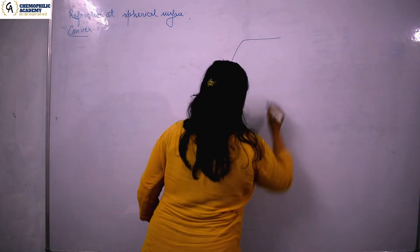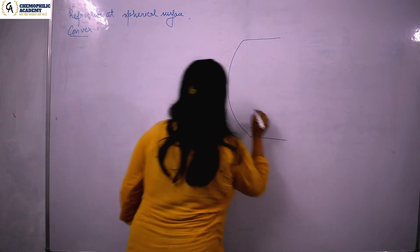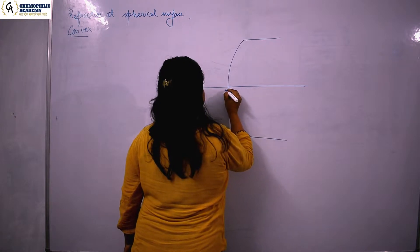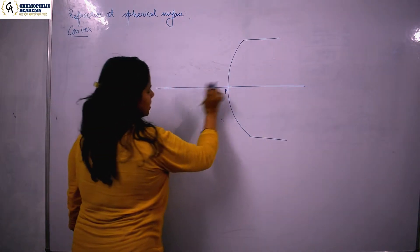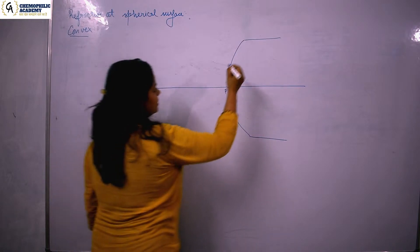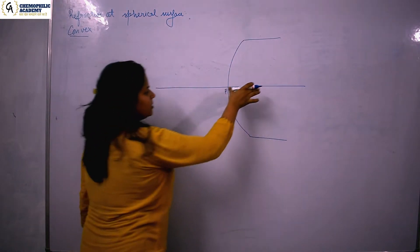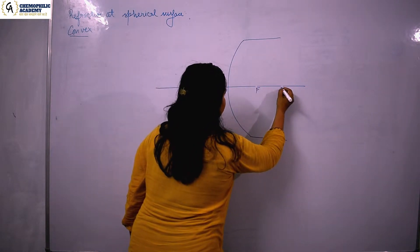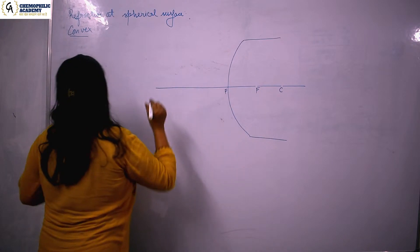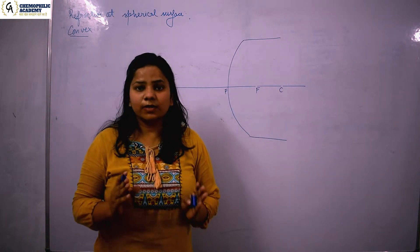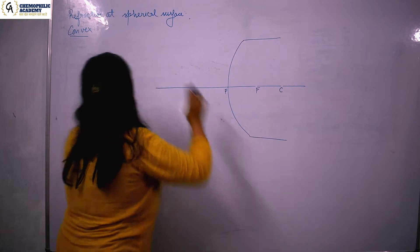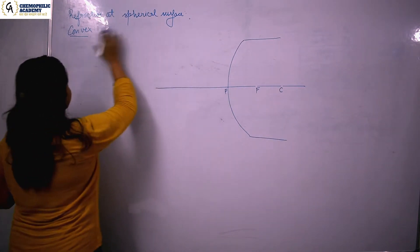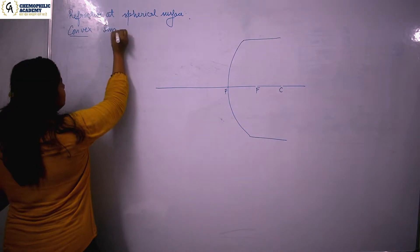This is your convex surface. This is your principal axis. Here you have to mark your focus and then the center of curvature. In this convex case, I want to tell you that the image is always real. When we get refraction through a spherical surface that is convex, the image is always real.